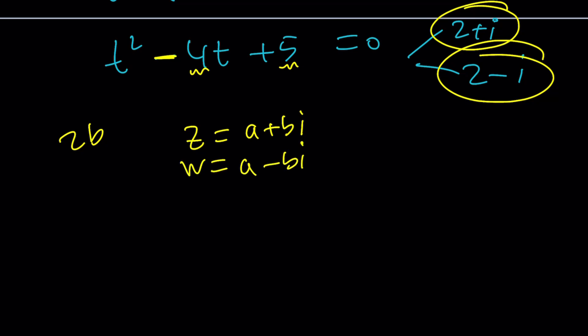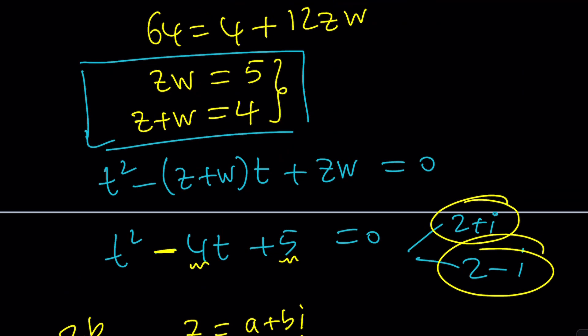Wait a minute. Why did you pick the conjugate? Because their sum and product are both real. Get the idea? I do know that these two are real numbers. That means z and w are complex conjugates. Awesome.